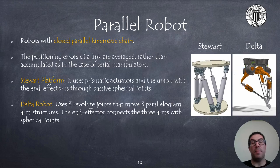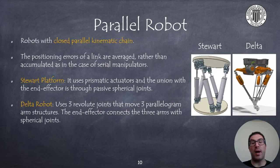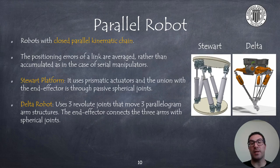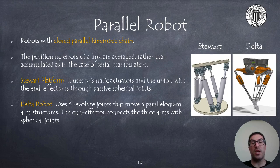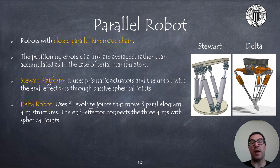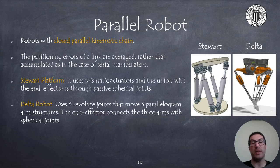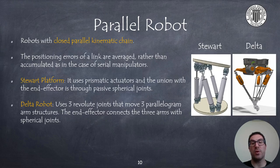The Parador robot has by definition a closed kinematic chain. One of the advantages is that positioning errors are averaged and do not accumulate, as is the case with serial manipulators.